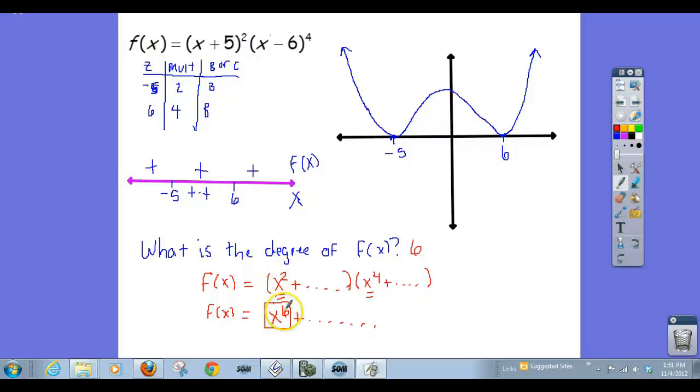So what's the point of knowing the degree? Well, there is something about the degree of a polynomial that relates to its end behavior. And so what I mean by end behavior is the limit as x goes to infinity and the limit as x goes to negative infinity. There is something about the degree of the polynomial that determines the end behavior.